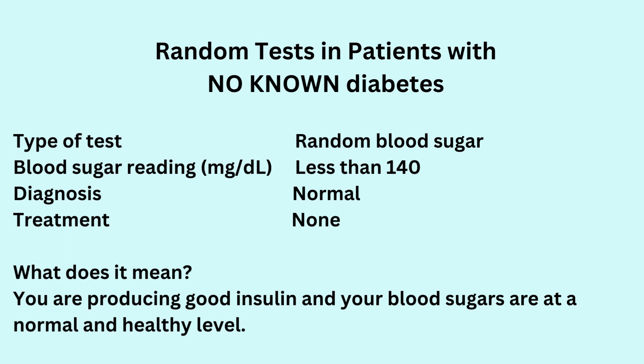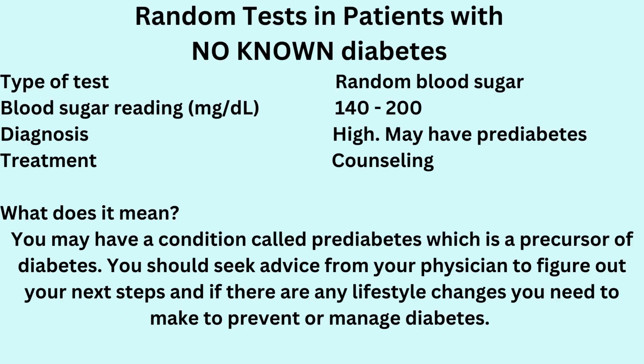If the blood test you had was a random blood sugar and you got a reading between 140 and 200 milligrams per deciliter, then your blood sugar level is high. Patients may have pre-diabetes at this point. Pre-diabetes is a precursor of diabetes. You should seek advice from your physician to figure out your next steps and any lifestyle changes you need to make to prevent or manage diabetes.